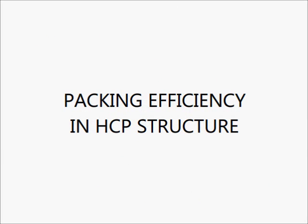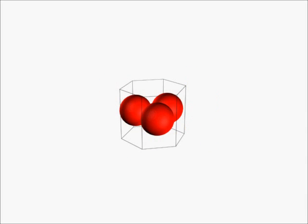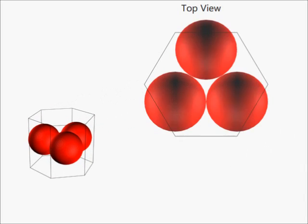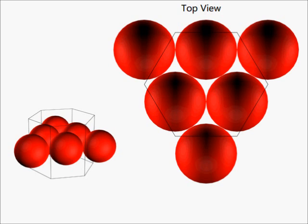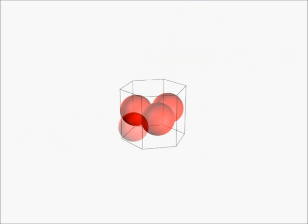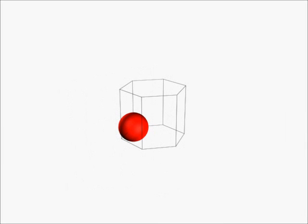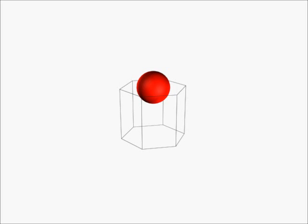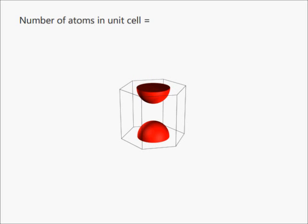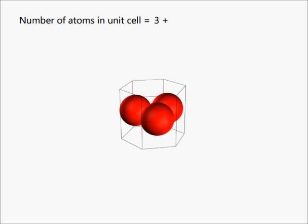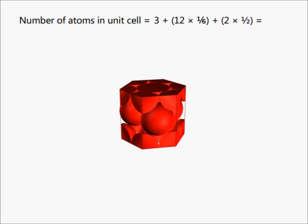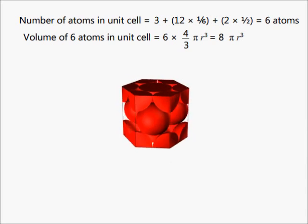Packing Efficiency in HCP structure: The 3 interior atoms contribute their full volume to the unit cell, although it does not seem so from the picture — the volume outside the unit cell is compensated by similar atoms from adjacent unit cells. The 12 corner atoms of the hexagonal faces are each shared by 6 unit cells, contributing 1/6th each. The 2 atoms at the center of the hexagonal faces are shared by 2 unit cells, contributing half each. So the number of atoms in the unit cell is 3 + 12 × (1/6) + 2 × (1/2), which equals 6 atoms.